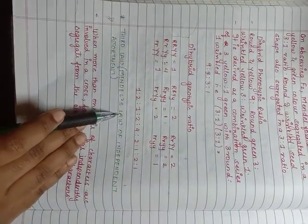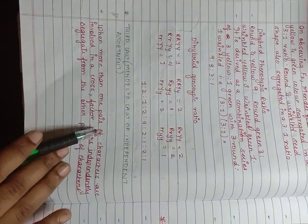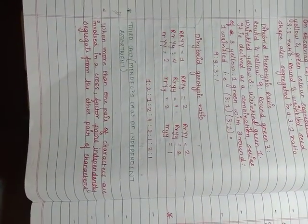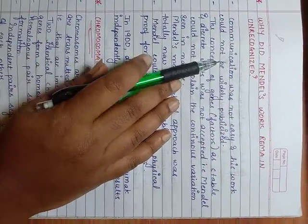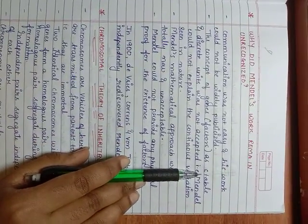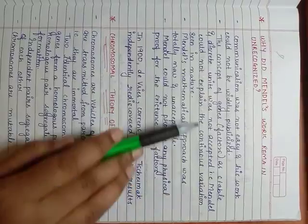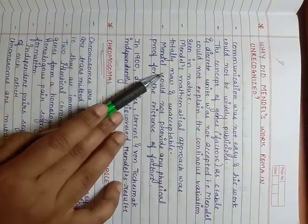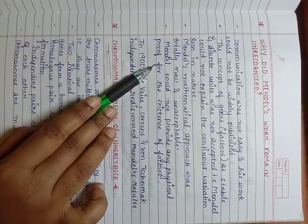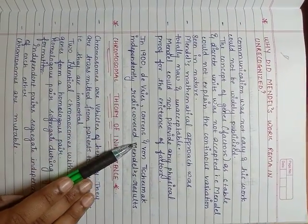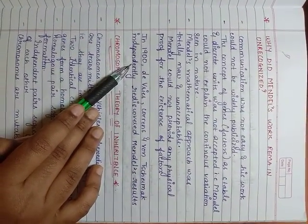Here we come to the third law, that is Mendel's law of independent assortment. When two or more pairs of characters are involved in a cross, factor pairs are independently segregated from the other pair of characters. Now let us see why did Mendel's work remain unrecognized. Communication was not easy and his work could not be widely publicized. The concept of genes or factors as stable and discrete units was not accepted, i.e. Mendel could not explain the continuous variation seen in nature. Mendel's mathematical approach was totally new and unacceptable. Mendel could not provide any physical proof for the existence of factors. In 1900, De Vries, Correns, and von Tschermak independently rediscovered Mendel's results.